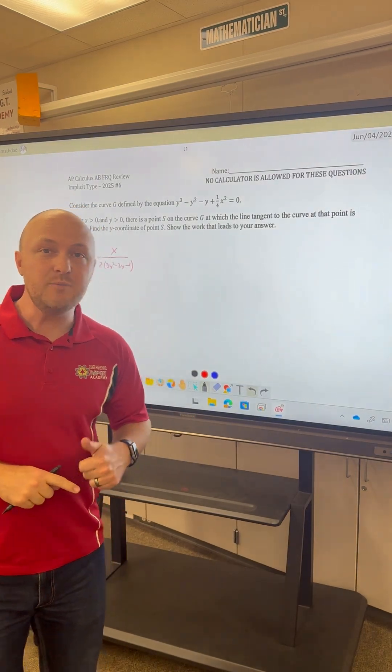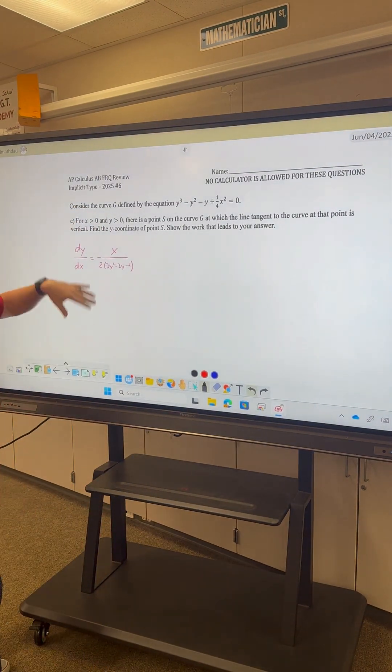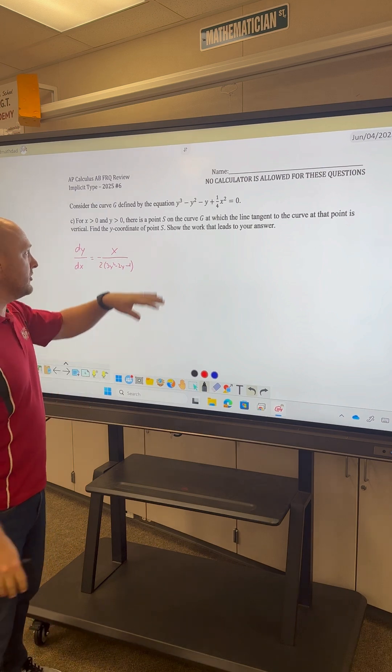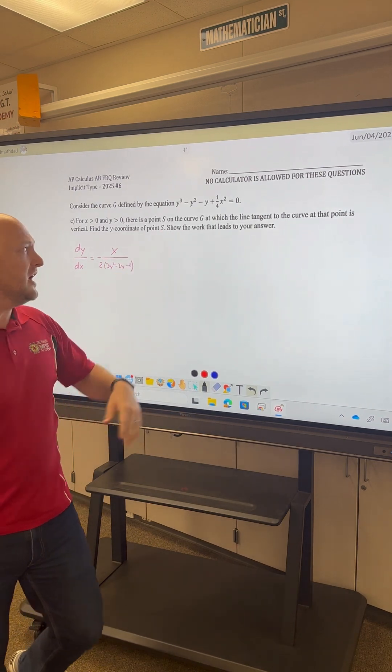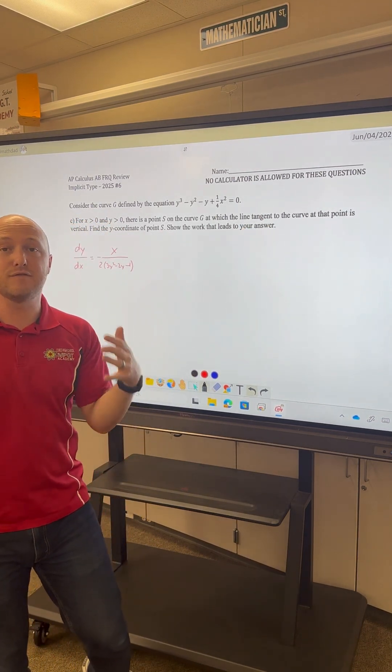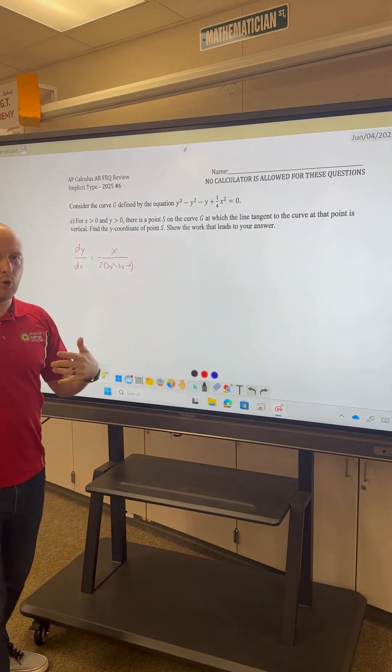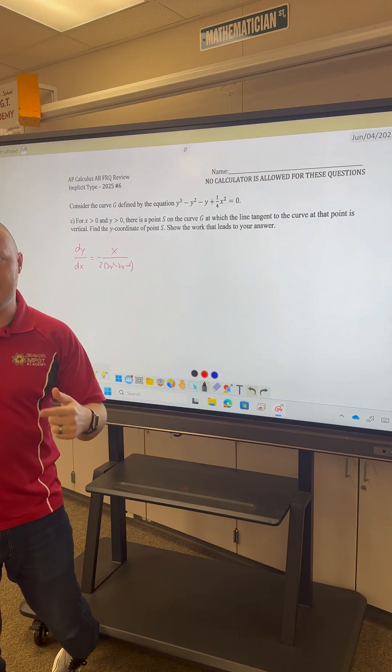Question 6C on the 2025 AP Calculus exam. C says for x and y greater than 0, there's a point S on curve G at which the line tangent to the curve at that point is vertical. Find the y-coordinate of point S and show the work that leads to your answer.